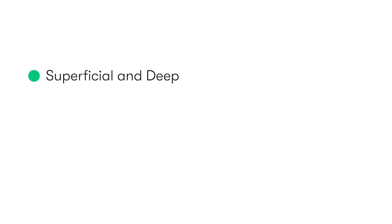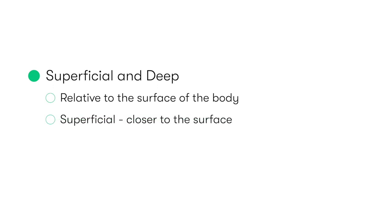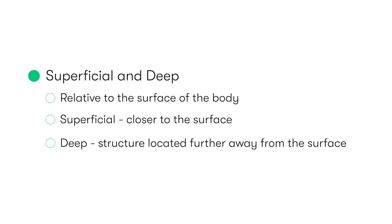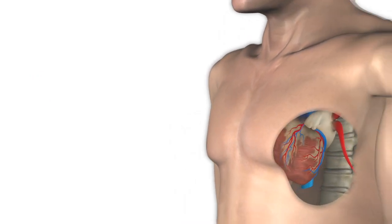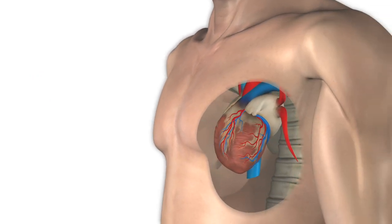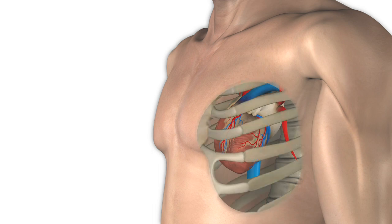The final terms help us describe the depth of a structure relative to the surface of the body: superficial and deep. Superficial describes when something is closer to the surface, whereas deep refers to a structure further away from that surface. For example, the heart would be described as deep in relation to the more superficially located ribcage, which is obviously closer to the body surface.